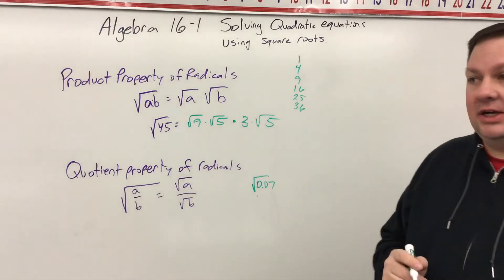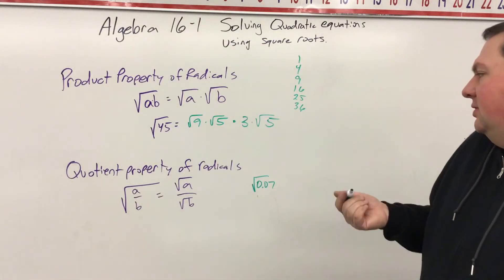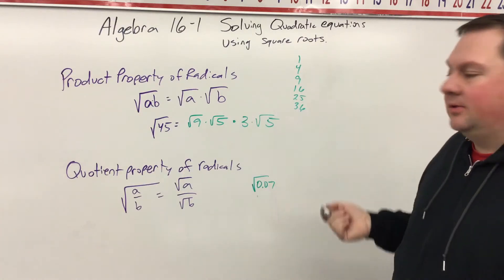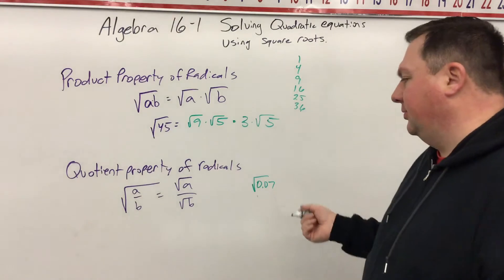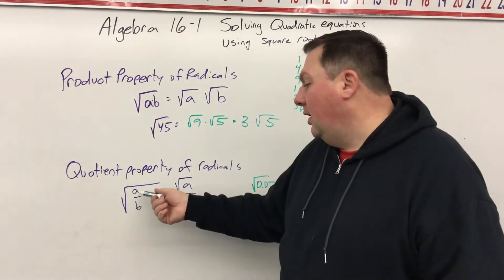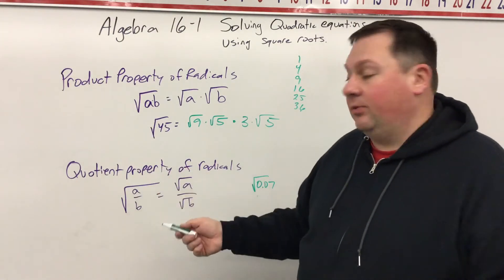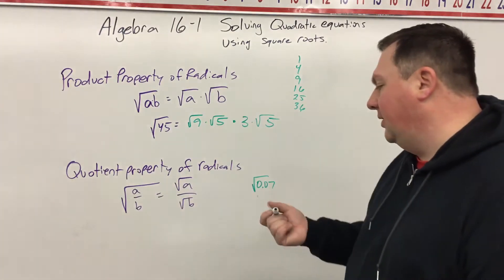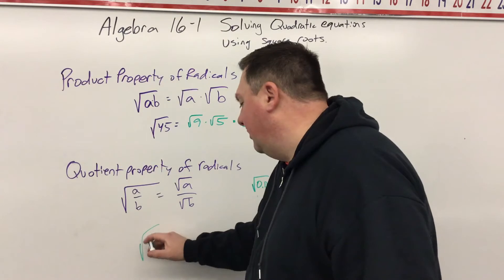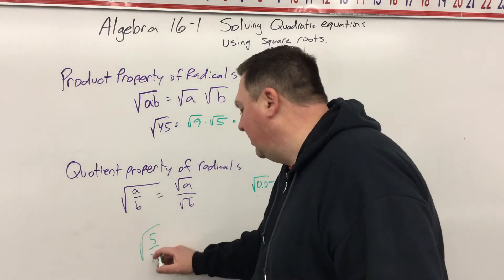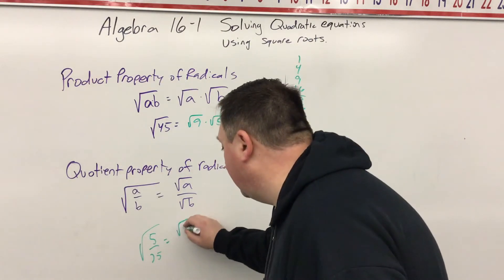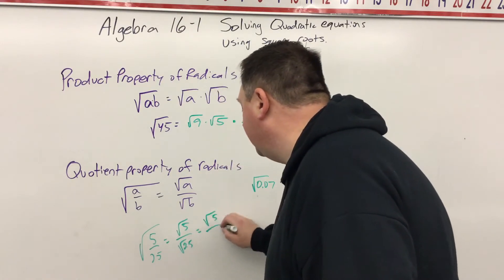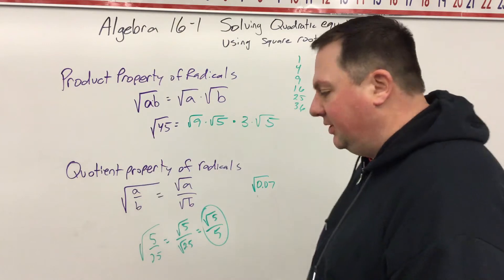If we did this with any numbers, just look for any of the perfect squares. Now we have the quotient property of radicals, which means when you divide a divided by b inside the radical sign, it's the same as the square root of a divided by the square root of b. So for example, if we have the square root of 5 over 25, that would equal the square root of 5 divided by the square root of 25, which equals the square root of 5 divided by 5. And that's as simple as you can go.